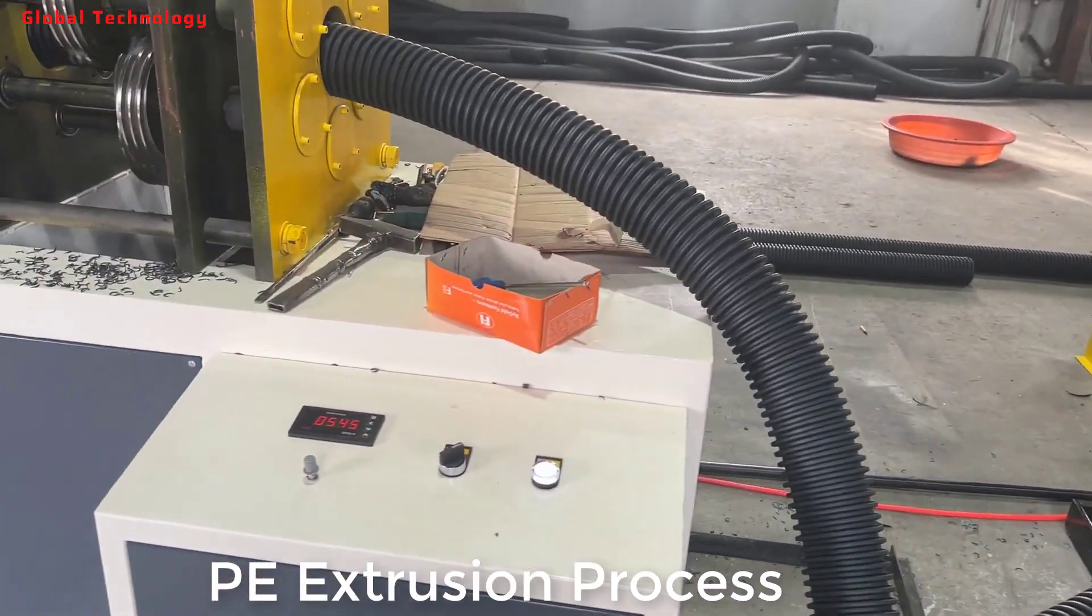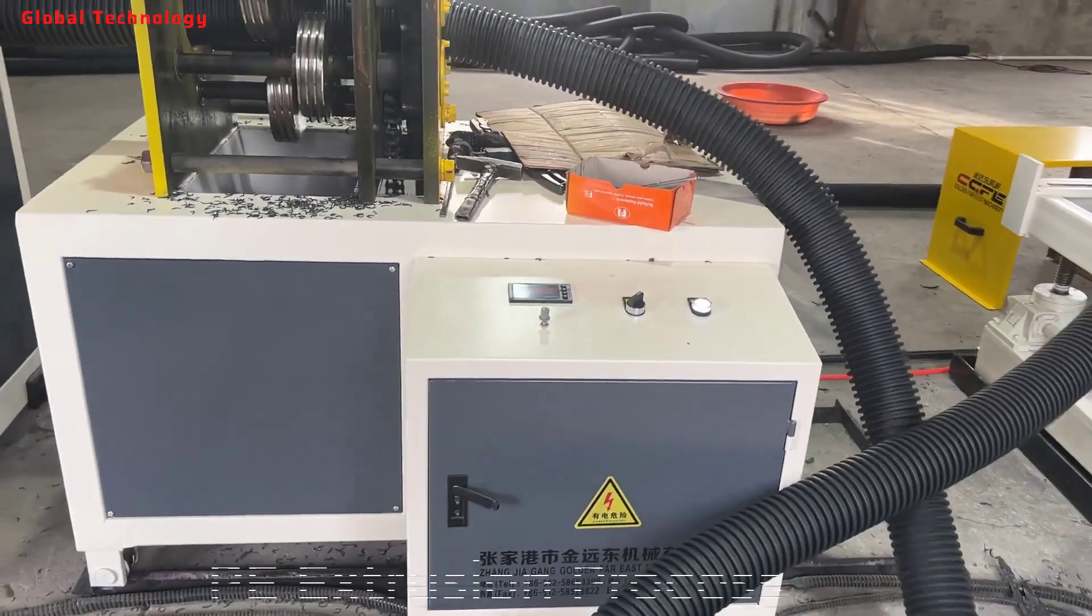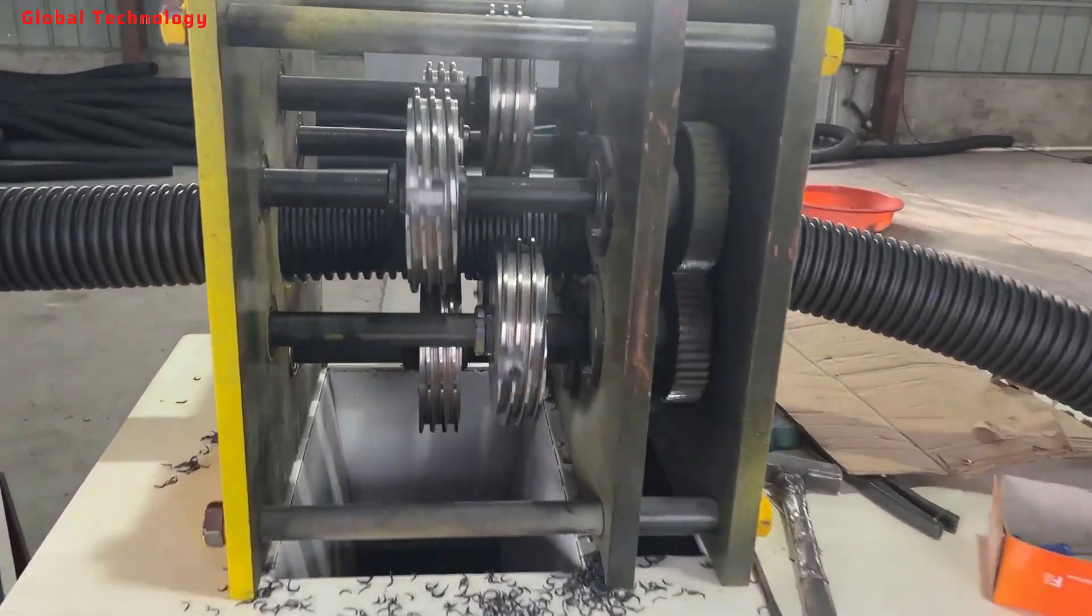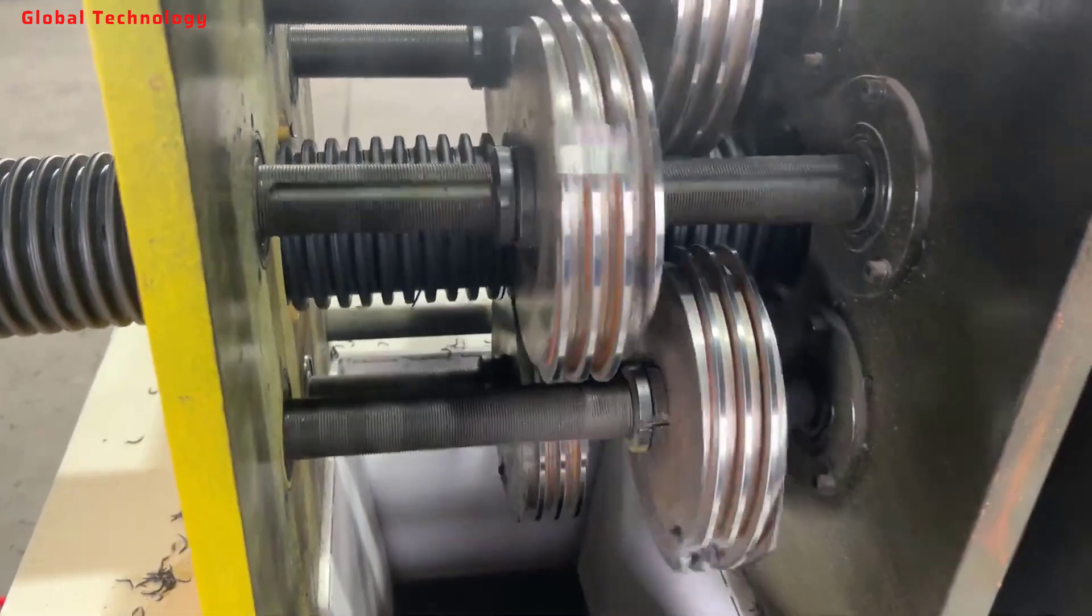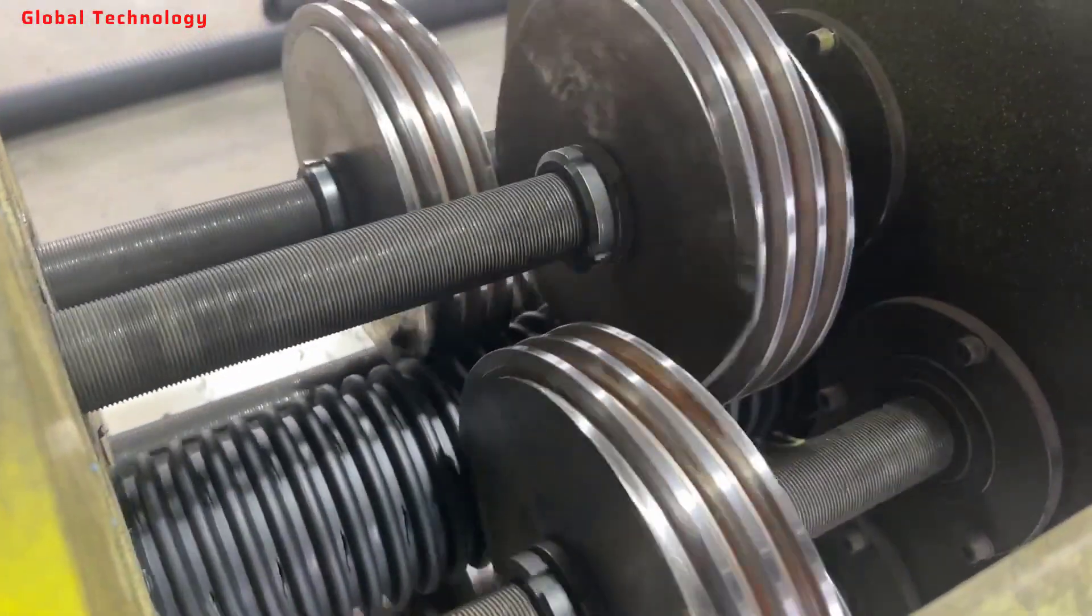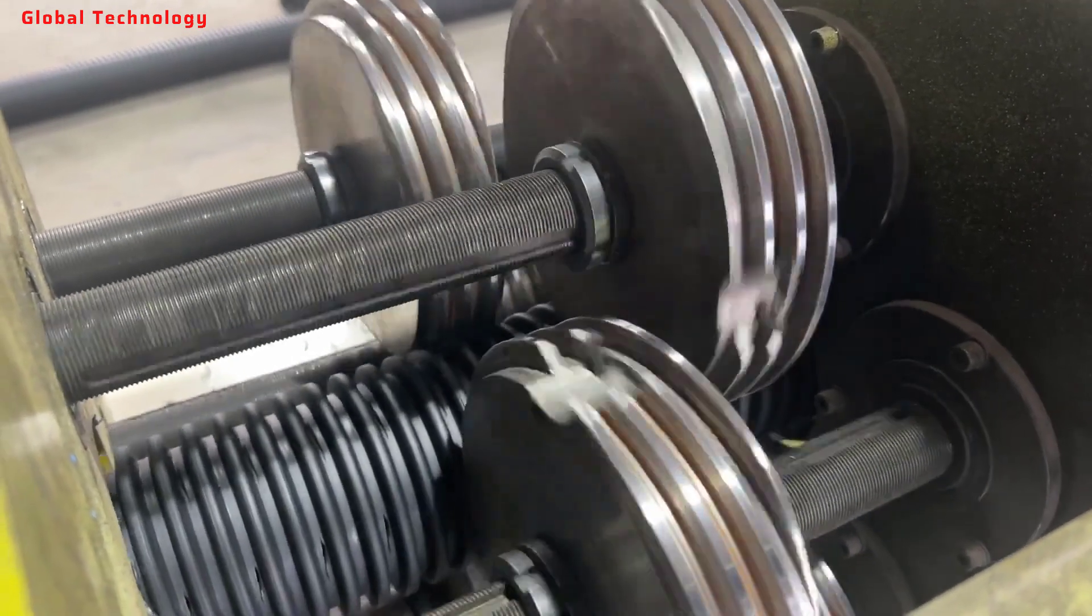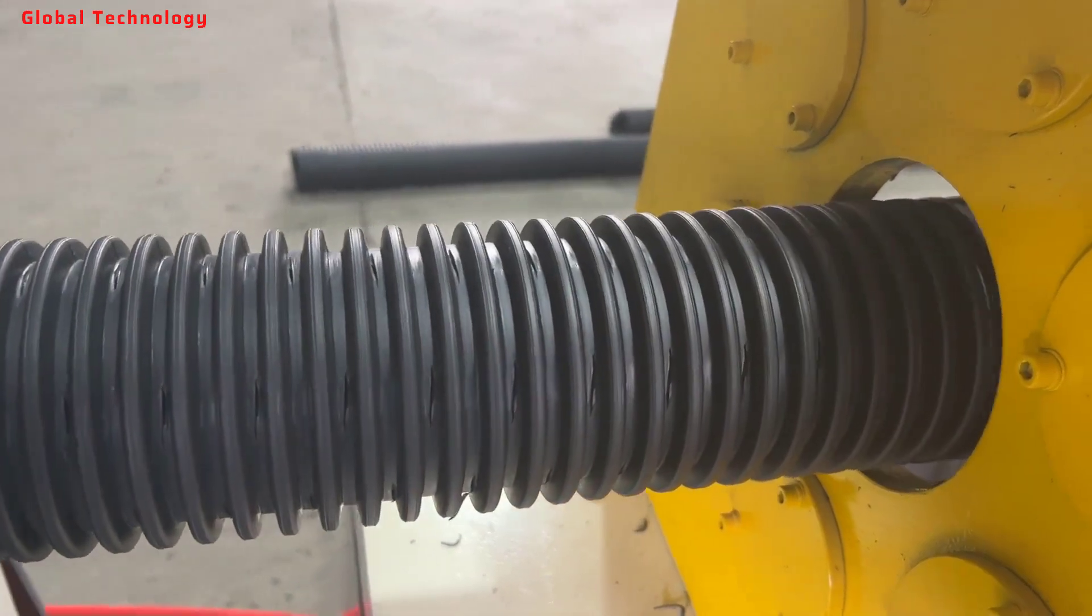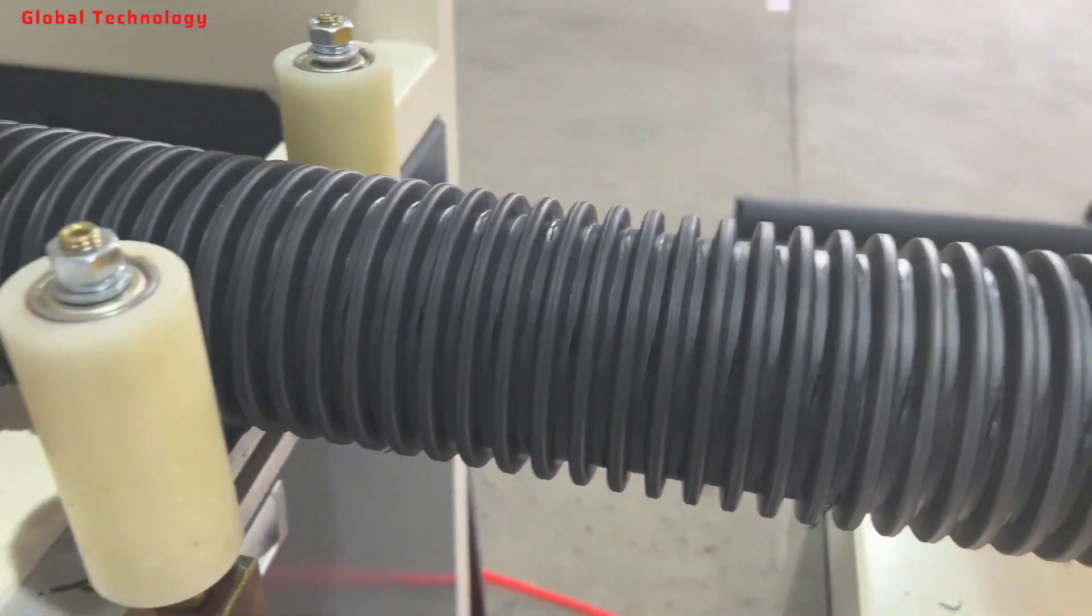PE pipe is pipe that's made of polyethylene. These pipes are made of thermoplastic material, which is produced by the polymerization of ethylene. PE pipe is made by a process known as extrusion, so it's easy to produce pipes of different sizes.